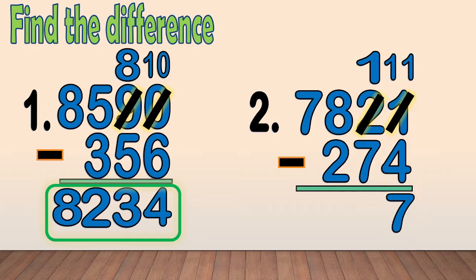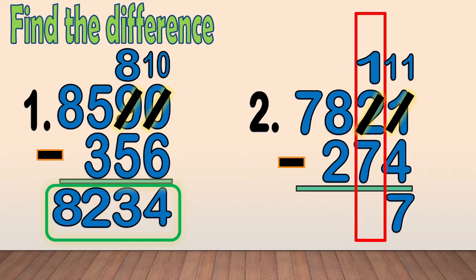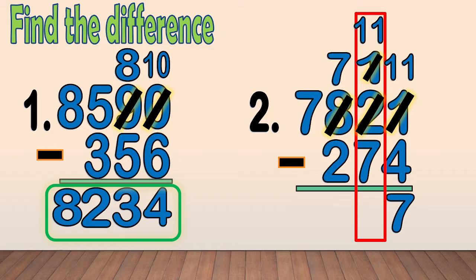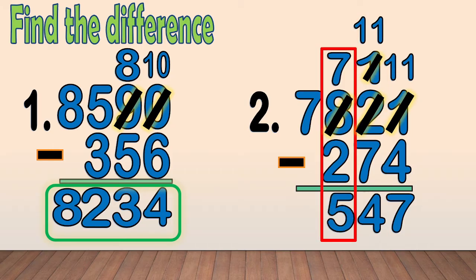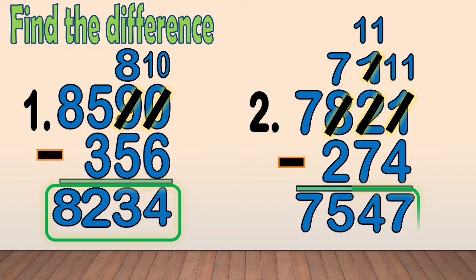Next, we subtract the tens: 1 minus 7. We cannot subtract 7 from 1, so we regroup 100 from 8. We have 11 tens. We cross out the 1 and write 11 as new tens. Now we only have 7 hundreds — we cross out the 8 and write 7 at the top. We subtract the tens: 11 minus 7 equals 4. Now, we subtract the hundreds: 7 minus 2 equals 5. And bring down the thousands digit 7. Our final answer is 7,547.